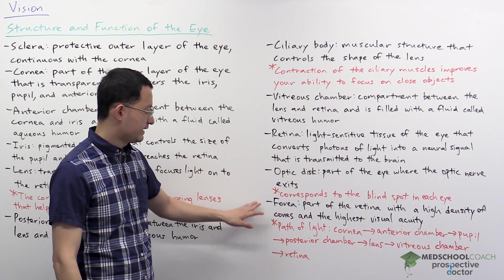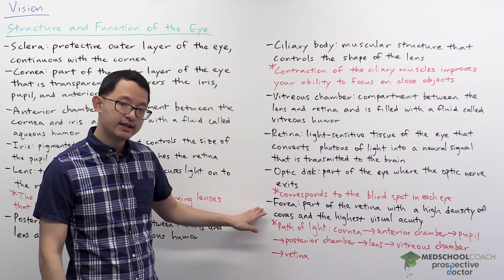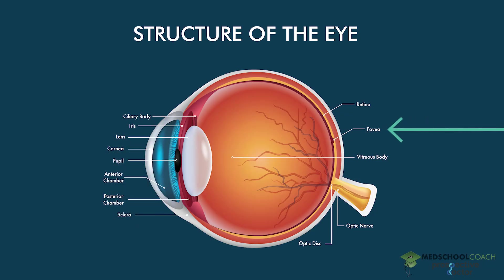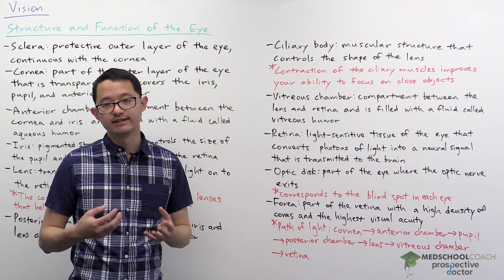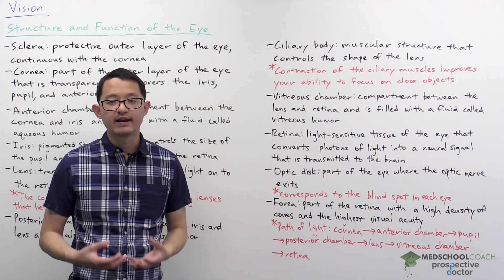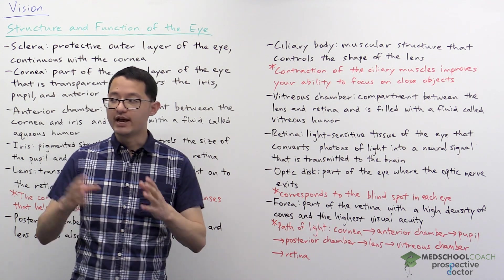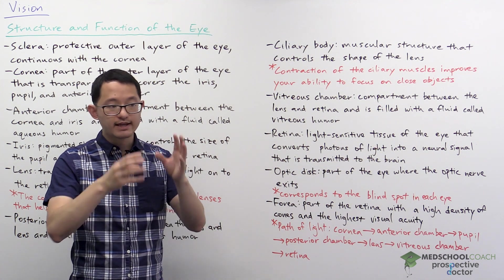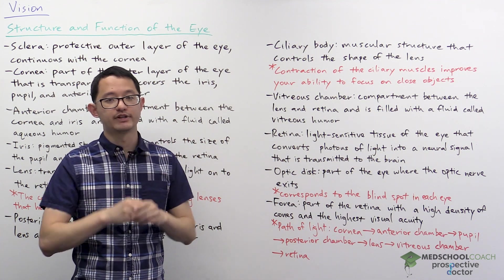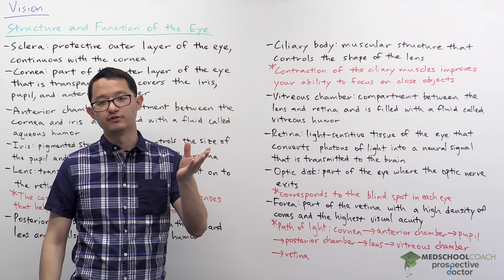And finally, we have the fovea. If you look at the diagram, you'll see that the fovea is a particular area of the retina. The fovea is important because it has a high density of cones and the highest acuity vision. So anywhere you look, really right at the center of your focus, that's where you have the highest visual acuity, and that's due to the fovea.